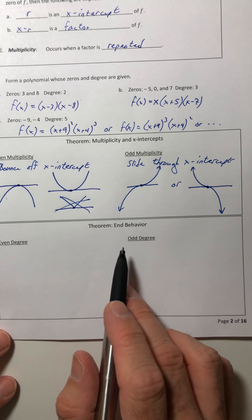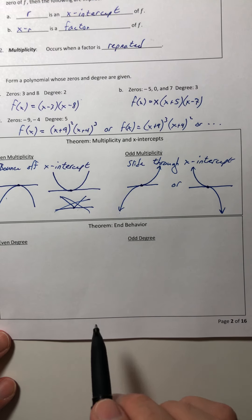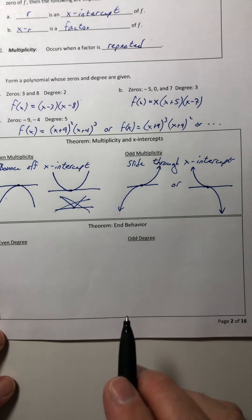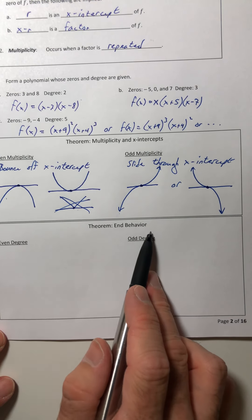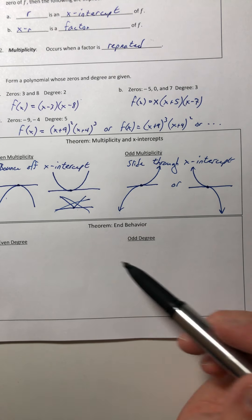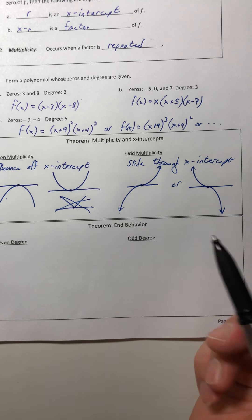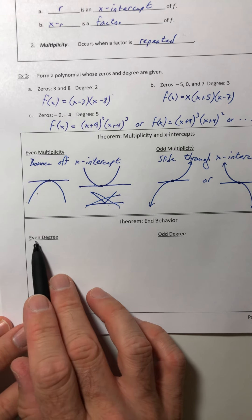All right. Let's go ahead and talk about end behavior and then we'll pause and then get into some actual graphing. Okay. So end behavior, like you can know what the ends of the graph are doing just based on the degree.